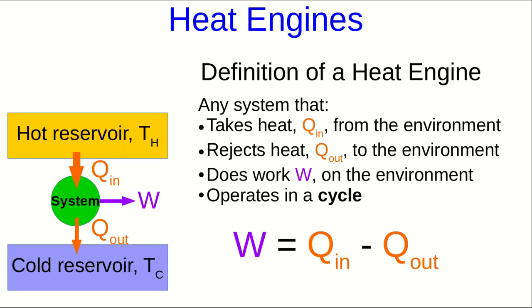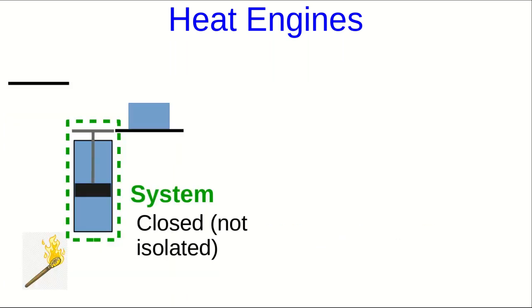Conservation of energy now dictates that the work done must just be the difference between the heat in and the heat out. In the case of this simple example of a heat engine, the system is closed. Note that it's not isolated. There is exchange of energy with the environment. Heat in, heat out, and work done on the environment. But it is closed. There's no matter exchanged with the environment.